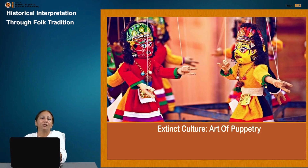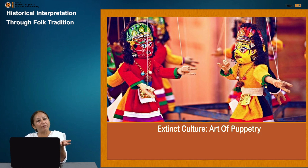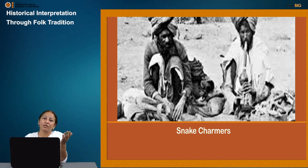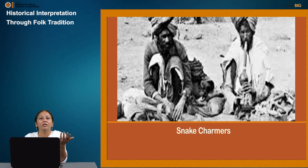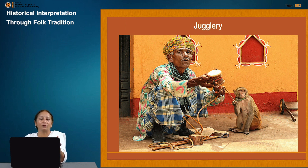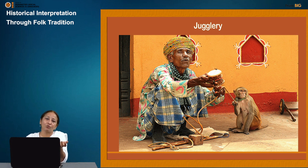Some examples illustrate this loss. The art of puppetry, which we used to see during our childhood, is now going extinct — there are very few people still in this profession. Snake charmers, who were commonly seen in and around our localities, are now on the verge of extinction. Similarly, jugglers who used to entertain people in marketplaces, villages, fairs, and festivals — that culture is also on the verge of extinction.